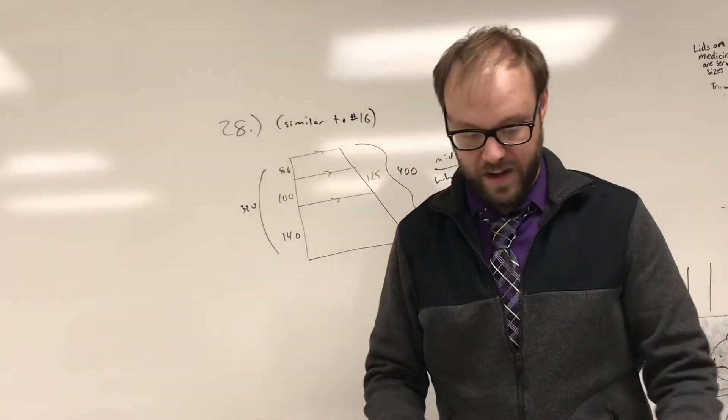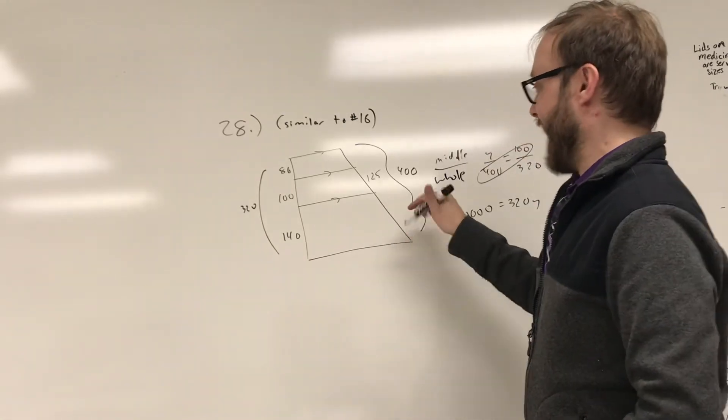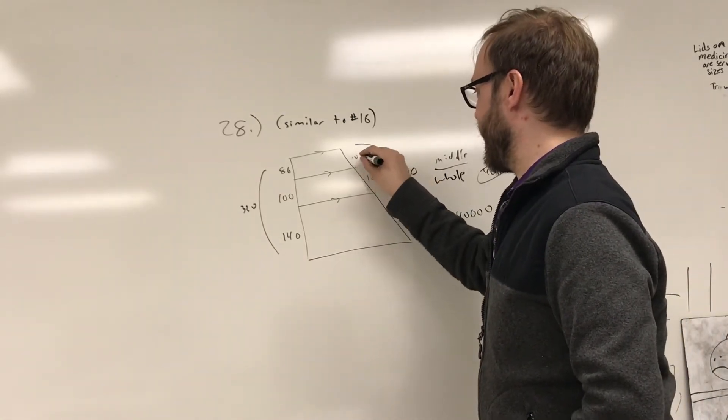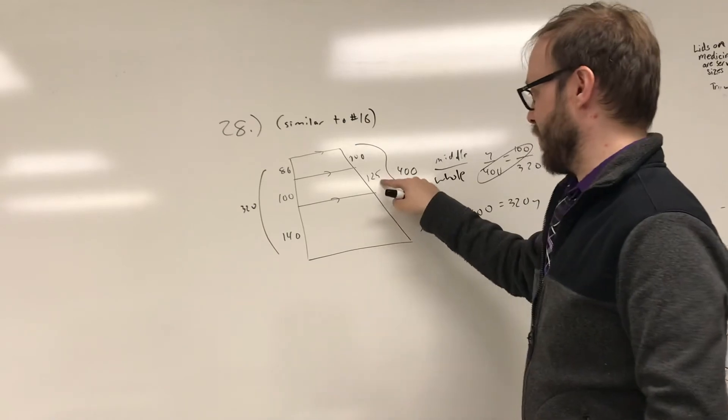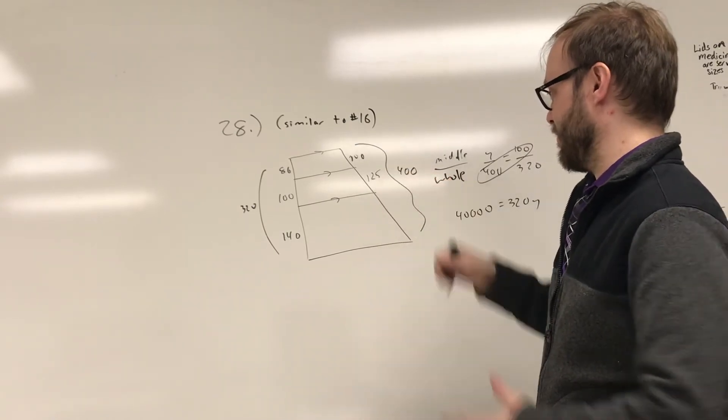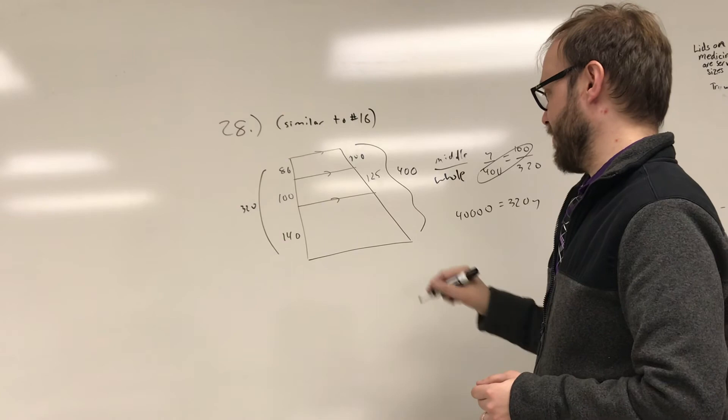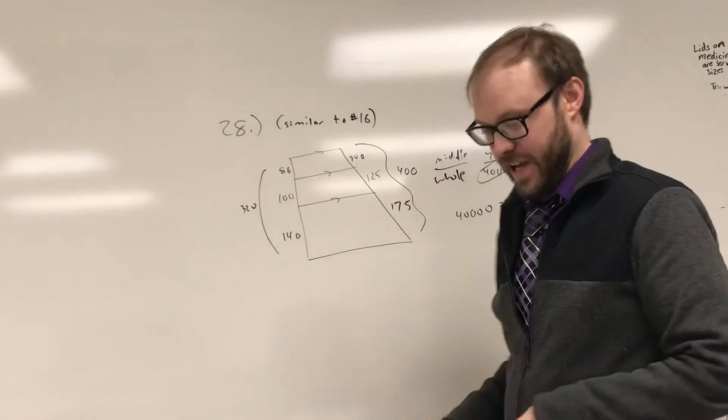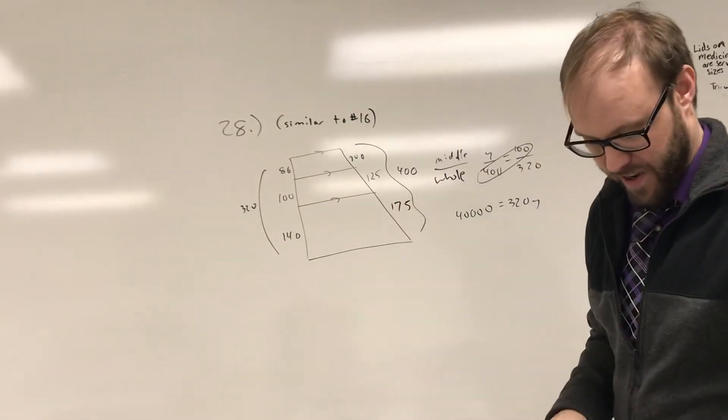And then to find your last length here. Actually, you already know that's 100. And you know that's 125. You can just subtract these two from 400. 400 minus 225 would be 175, right? And that ends up being our final answer there.